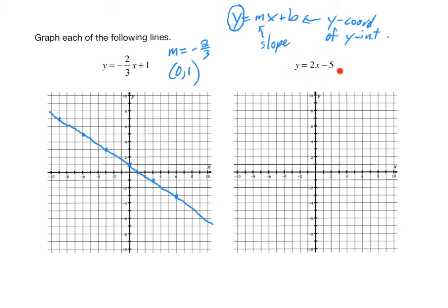Let's do the same thing with this next problem. First, let's identify the slope and the y-intercept. Since y is already isolated, the slope is the coefficient of x, which is just 2. And the y-intercept — because it's y equals mx plus b — the b value is negative 5. Hence, the y-intercept is (0, negative 5). Again, to plot a line when you have a point and its slope, the first thing you have to do is plot the point, in this case (0, negative 5), and then we use the slope from there to get additional points.